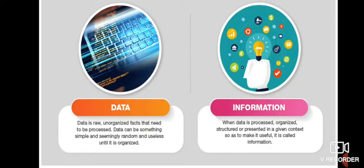Data is a collection of raw or unprocessed items, which includes text, words, numbers, sounds, etc. And information is processed data that conveys meaning to users. Data is an unprocessed item, and after processing the data, we get information, which is processed data. So, data is a collection of raw items and information is processed data.